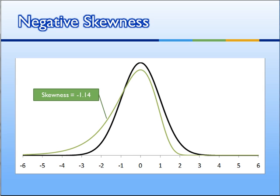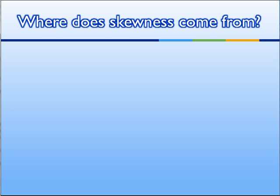This distribution is the mirror image, and it has negative skewness — it happens to be negative 1.14. The point is that it has a long tail on the left and a short tail on the right, and therefore it's negatively skewed.